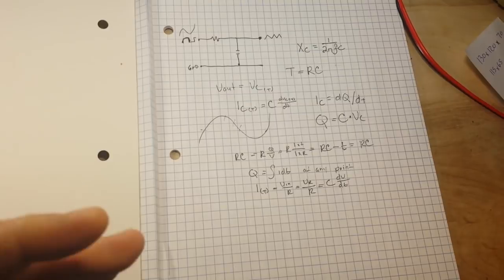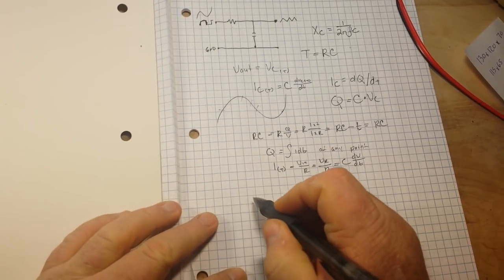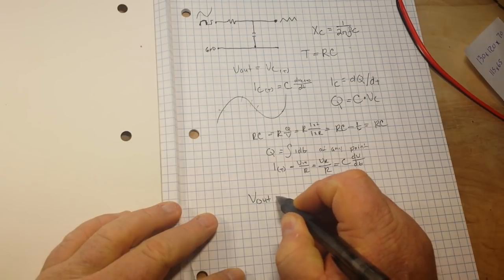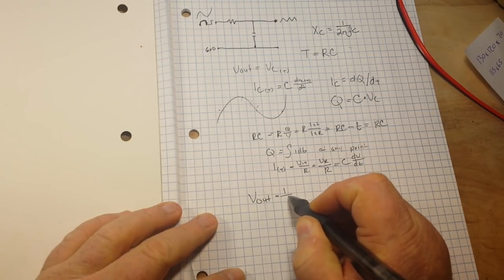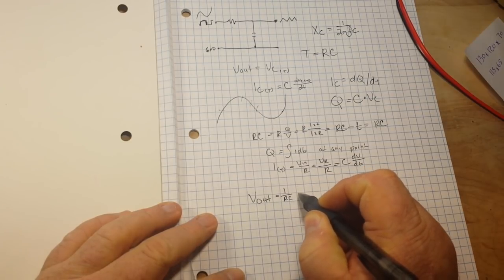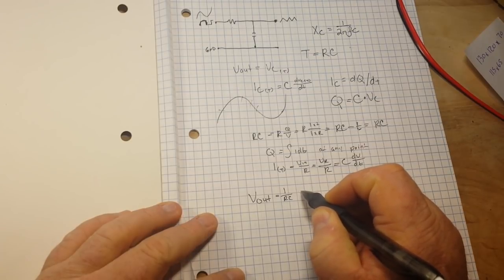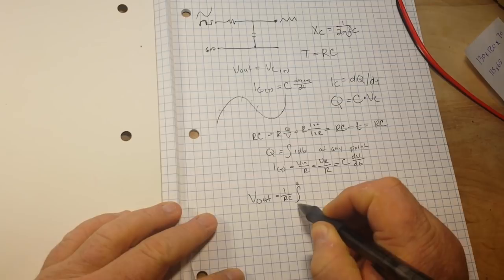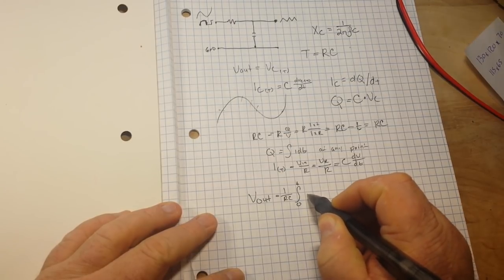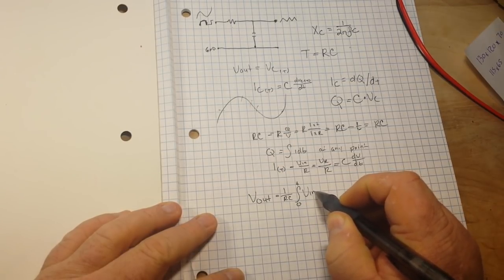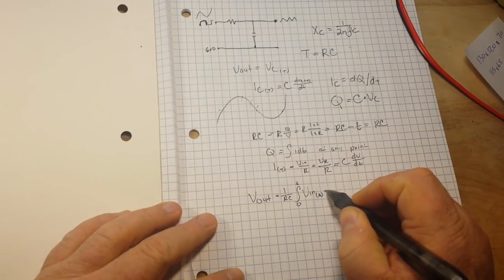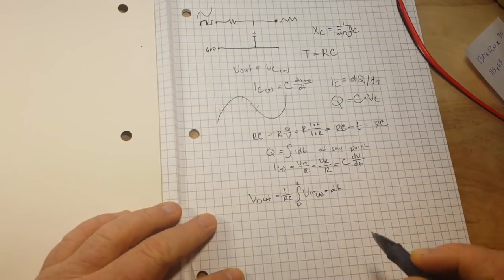Now the big finish. So we can say Vout is equal to 1 over the RC time constant Vn, times this particular formula, Vn, at some point in time, times the change in time.